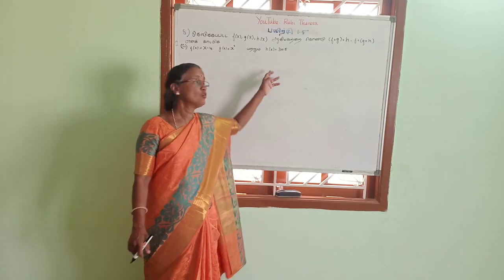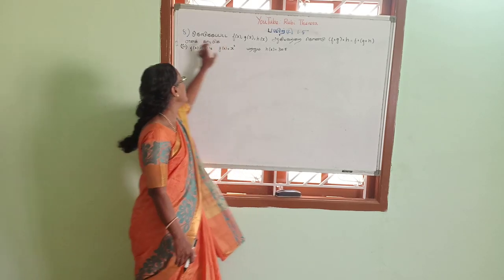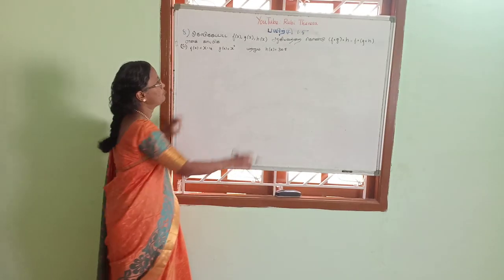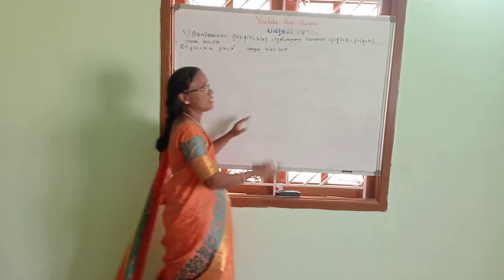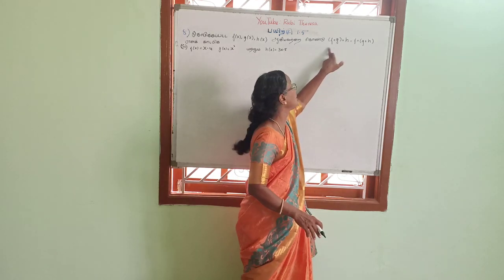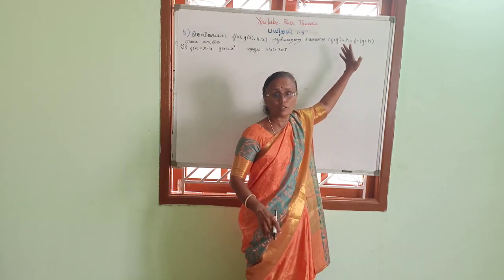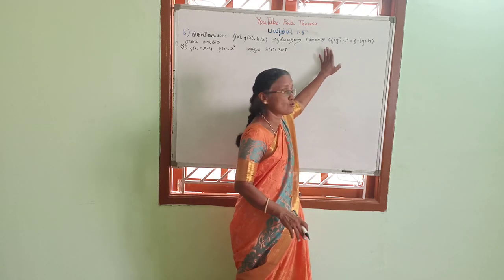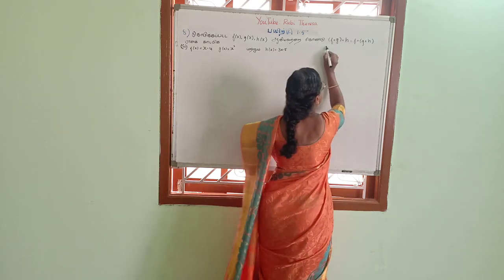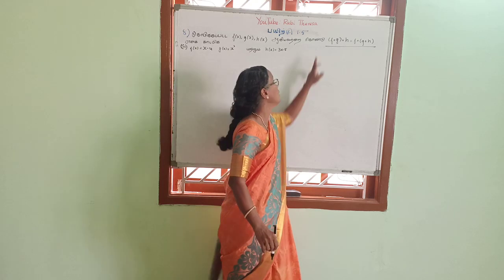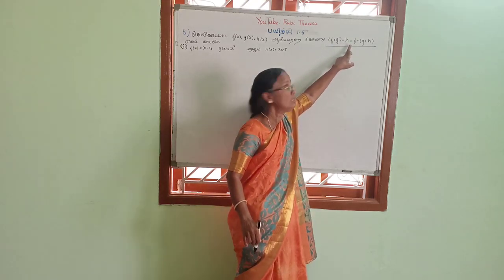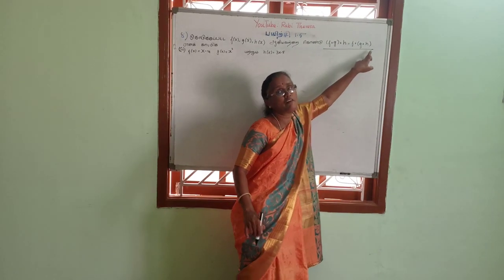I am going to do the associative property. We will know the associative property and we will know the relationship. F of G of H equals F of G of H.